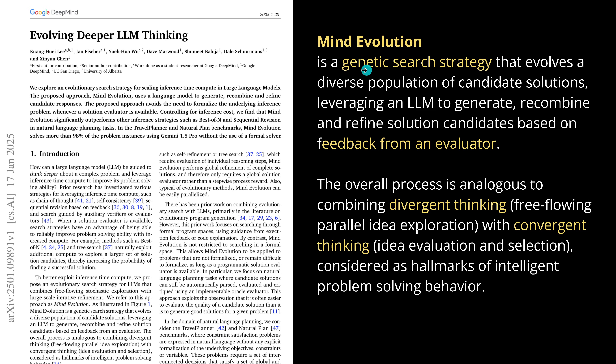They tell us it is a genetic search strategy. And me, with my simple mind, I was still locked to genetic biotechnology, because over there we also have genetic search strategies, but on completely different topics. Whatever terms you use from a different part of science in an AI publication, please don't do this — every specific technical term has its own environment. There is a genetic search strategy and feedback from an evaluator, and again: divergent thinking, convergent thinking — the hallmark of intelligent problem solving behavior.